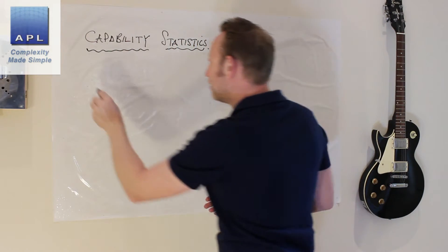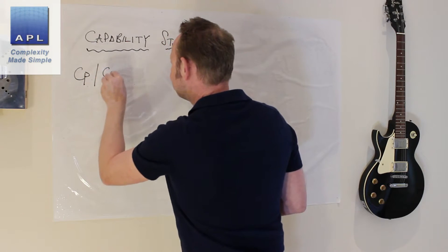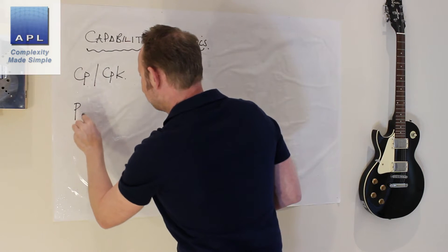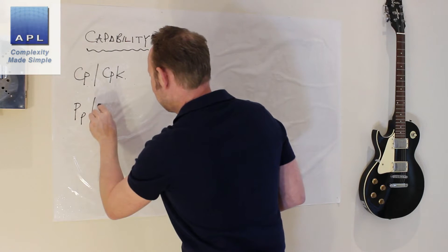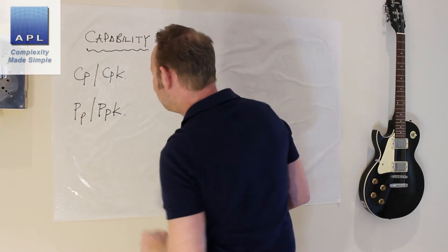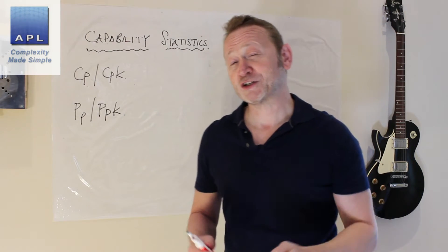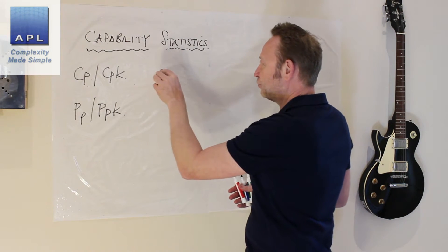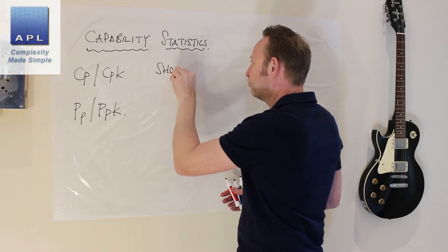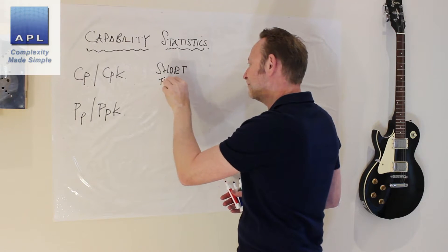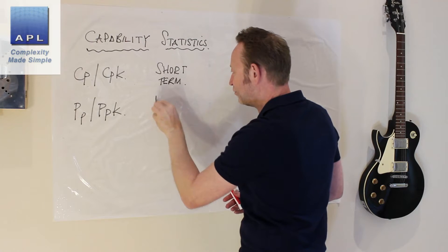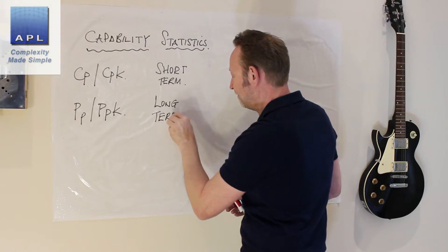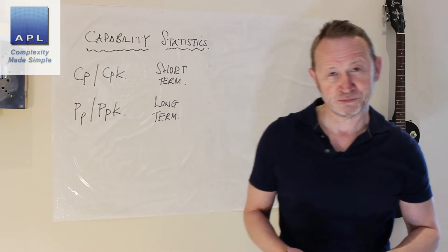There are plenty of them. We're going to go CP, CPK. There's an alternative version called PP, PPK. We're going to take a look at those first. I would call CP and CPK short-term capability, and PP and PPK I would call long-term capability.